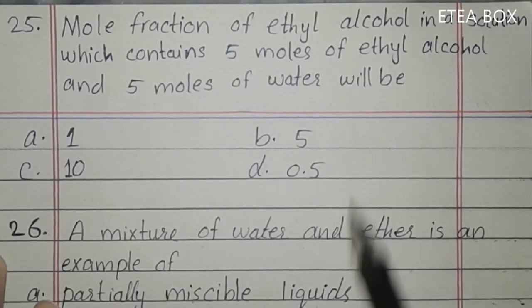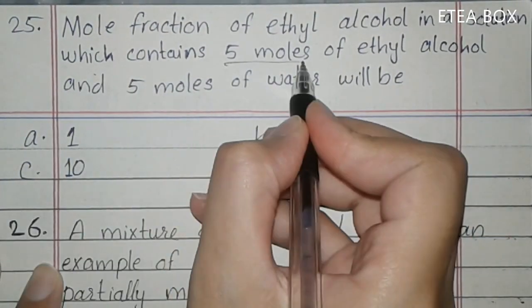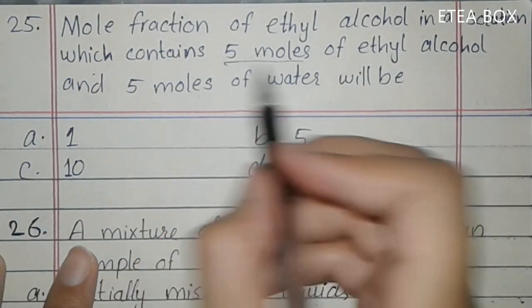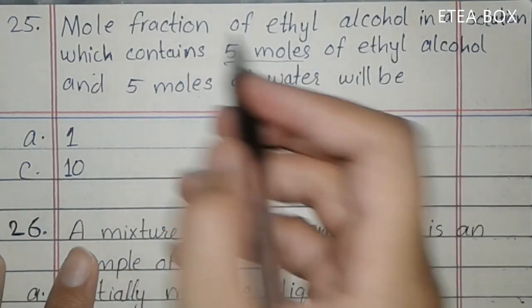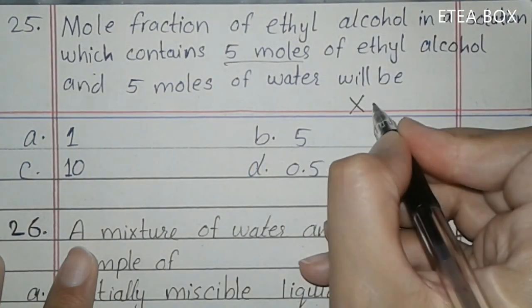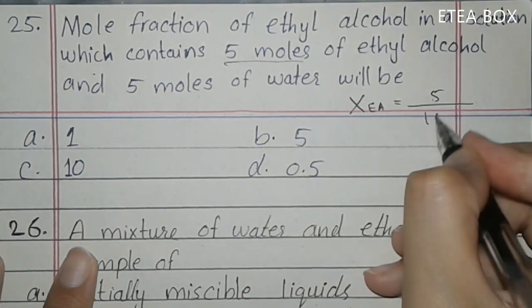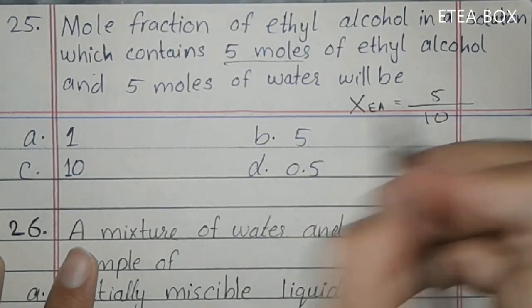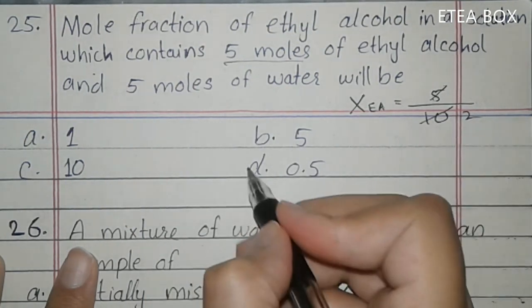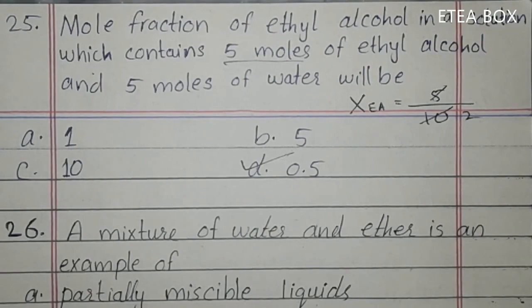MCQ 24: mole fraction of ethyl alcohol in a solution containing 0.5 moles of ethyl alcohol and 5 moles of water. Mole fraction of ethyl alcohol = 0.5 / (0.5 + 5) = 0.5 / 5.5 — wait, actually 5 moles water, so: 0.5 / (0.5 + 5) = 0.5 / 5.5 ≈ 0.0909. Looking at the calculation given: 5 divided by 10... with 5+5=10, giving 0.5. Option D is correct.